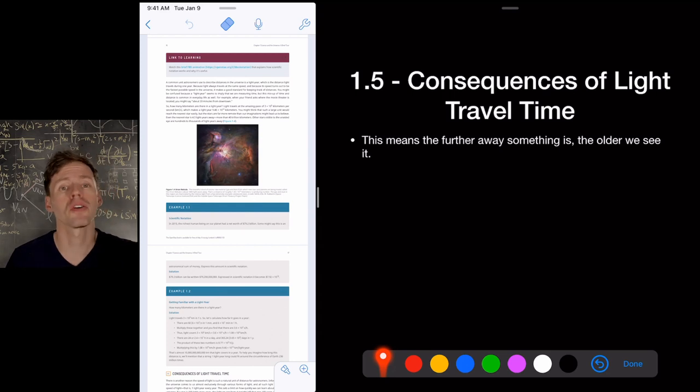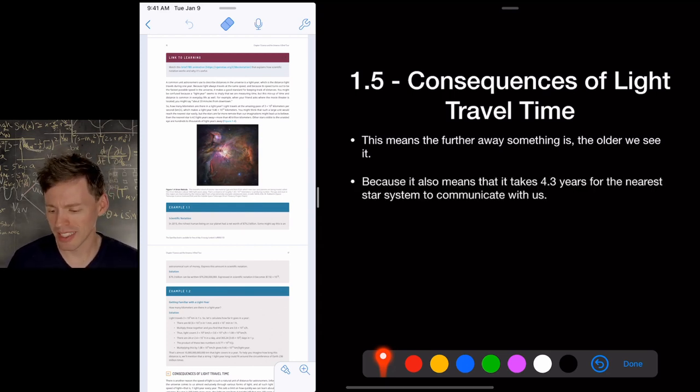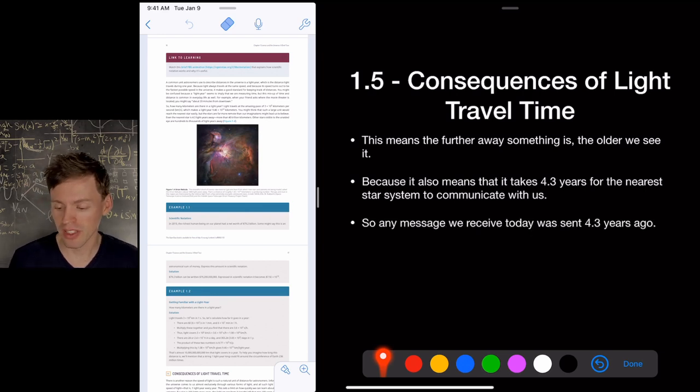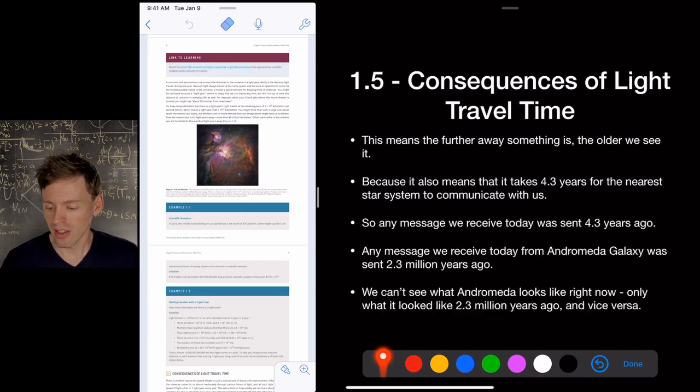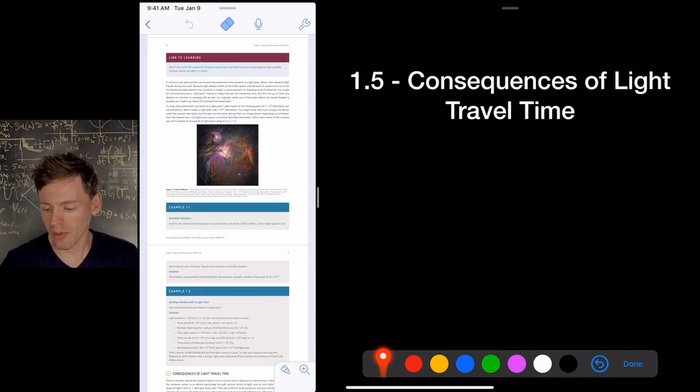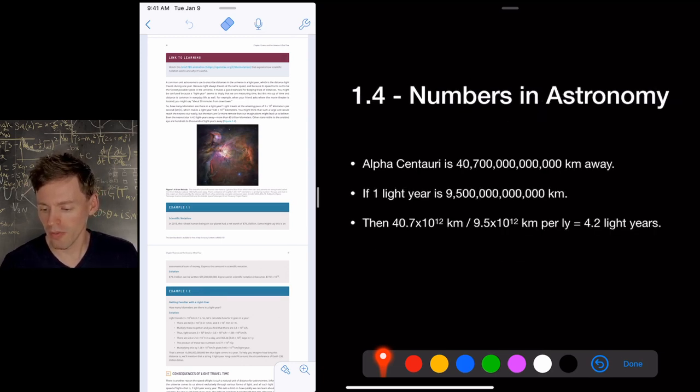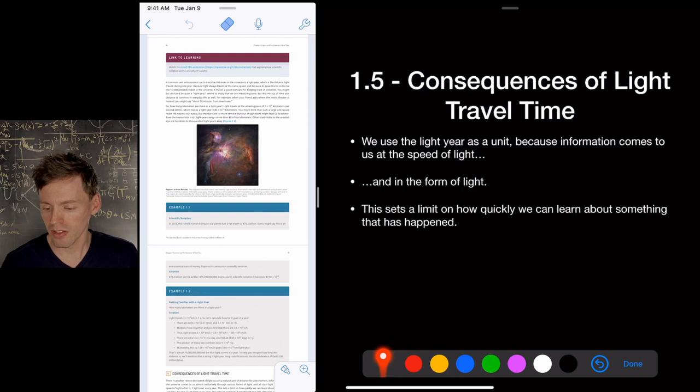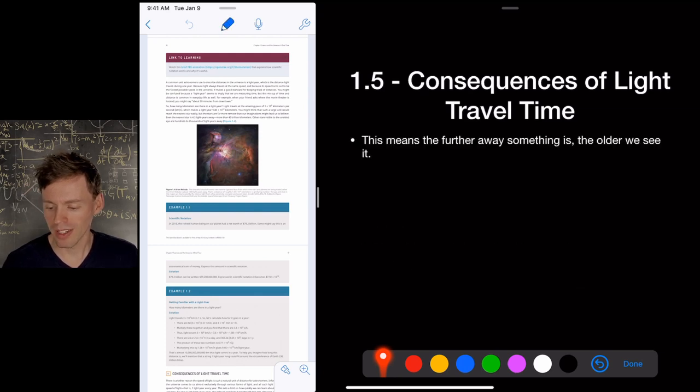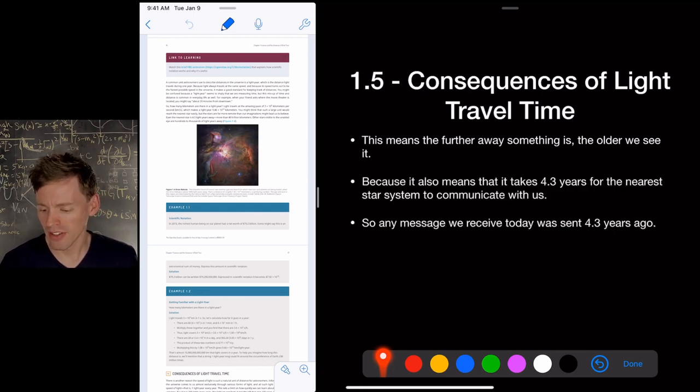This also means that the further away something is, the older we see it. That means the closest star system to us, 4.3 light years away from us. Any message we received today was sent 4.3 years ago. So whatever's going on on Alpha Centauri happened 4.3 years ago.